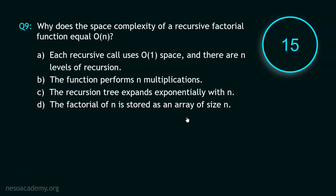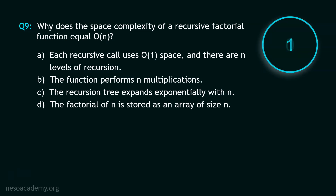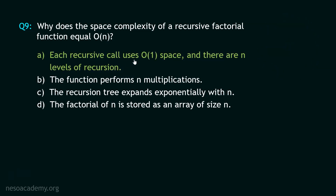And your time starts now. Stop. The correct option is option A. Each recursive call uses O(1) space and there are N levels of recursion. We already know the space complexity of the factorial function is O(N), because each recursive call uses O(1) space and there are N levels of recursion, meaning the depth of recursion is N. Now let's move to question number 10.